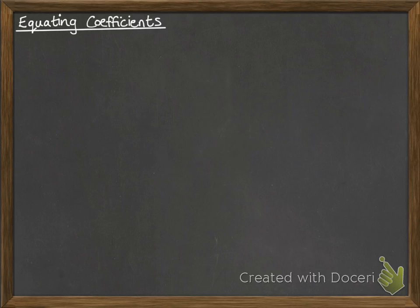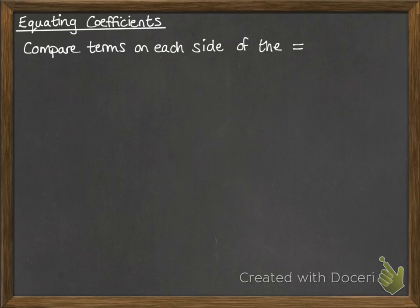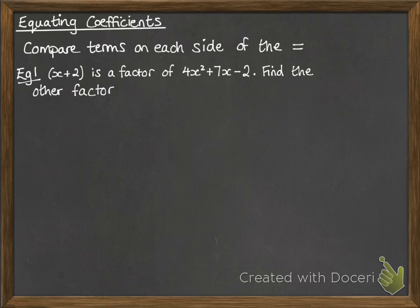Hi, this video is going to take you through a method called equating coefficients. So what you do with this is you compare the terms that are on each side of the equal sign. For example, x plus 2 is a factor of 4x squared plus 7x minus 2, and we want to find the other factor.